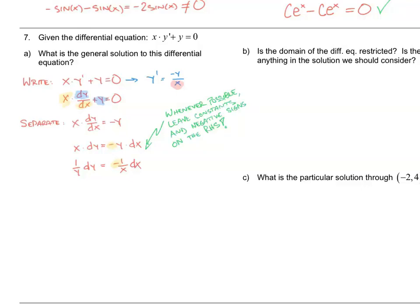Let's go back into our four-step process for solving a differential equation. We're at the integrate step. We already have our variables separated, so we take the antiderivative of both sides. That gives us the natural log of the absolute value of y equals the opposite of the natural log of the absolute value of x plus some constant. Now we're in the rewrite phase.